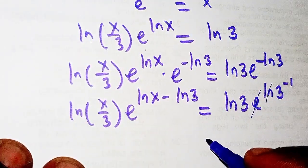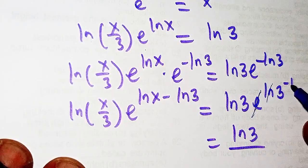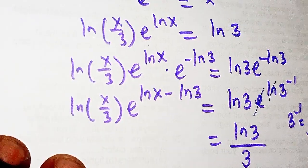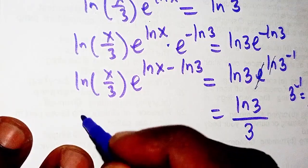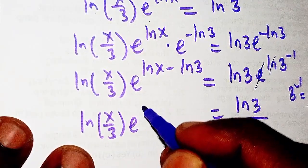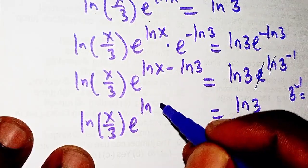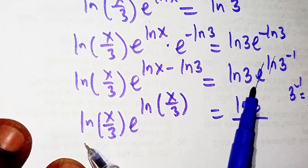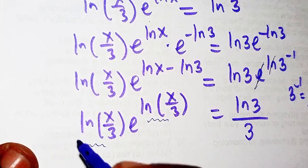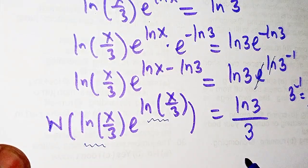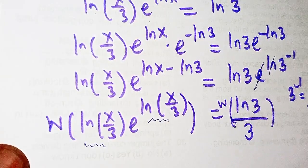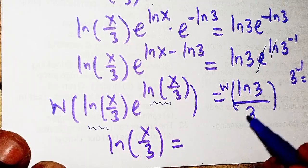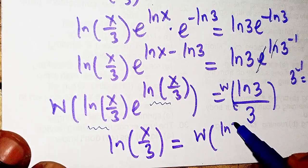Since e and ln are inverses, the right-hand side becomes ln(3) · e^(−ln 3) = ln(3) · (1/3) = ln(3)/3. On the left-hand side we now have ln(x/3) · e^(ln(x/3)). So the equation is now perfectly in Lambert W form: ln(x/3) · e^(ln(x/3)) = ln(3)/3.